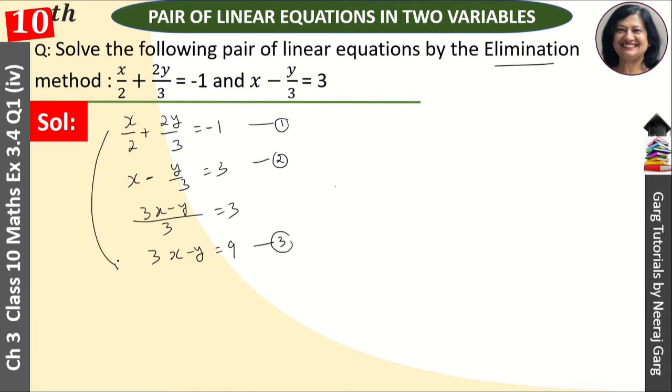Now let's do the first one. When we take LCM, we will write it first. Otherwise you will not understand. When we take LCM, this is 6. This is 3. This is multiplied by 3x plus 4y is equal to minus 6.